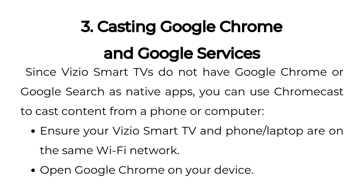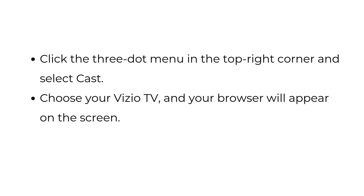Three: casting Google Chrome and Google services. Since Vizio Smart TVs do not have Google Chrome or Google Search as native apps, you can use Chromecast to cast content from a phone or computer. Ensure your Vizio Smart TV and phone or laptop are on the same Wi-Fi network. Open Google Chrome on your device, click the three-dot menu in the top right corner, and select Cast. Choose your Vizio TV and your browser will appear on the screen.